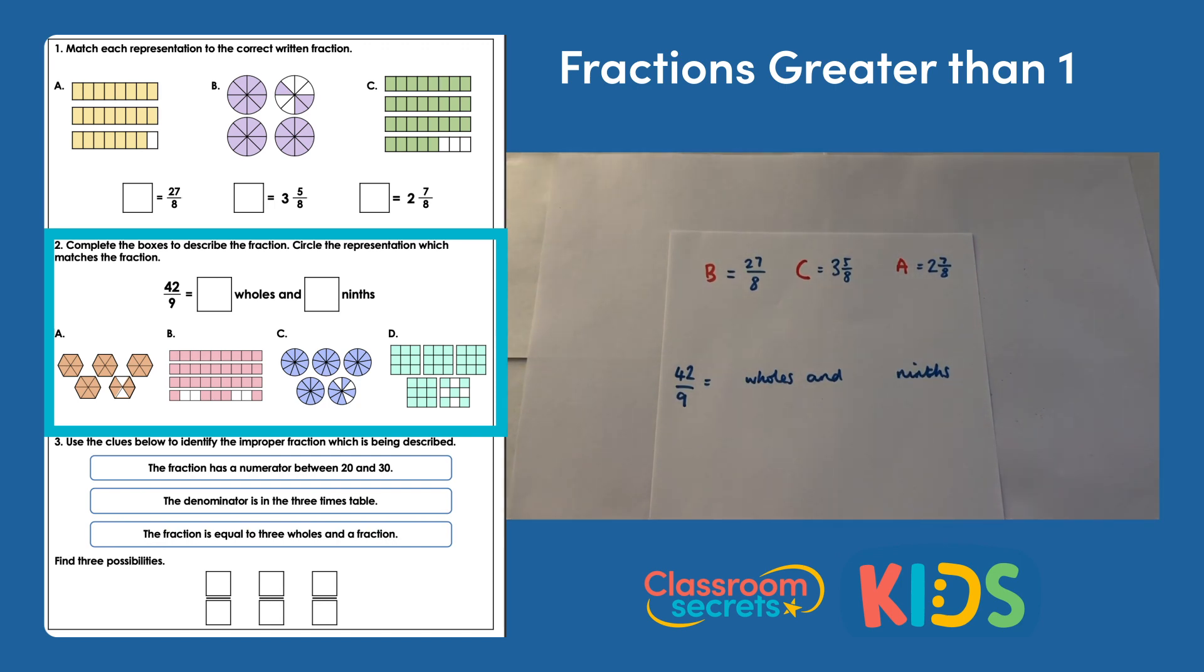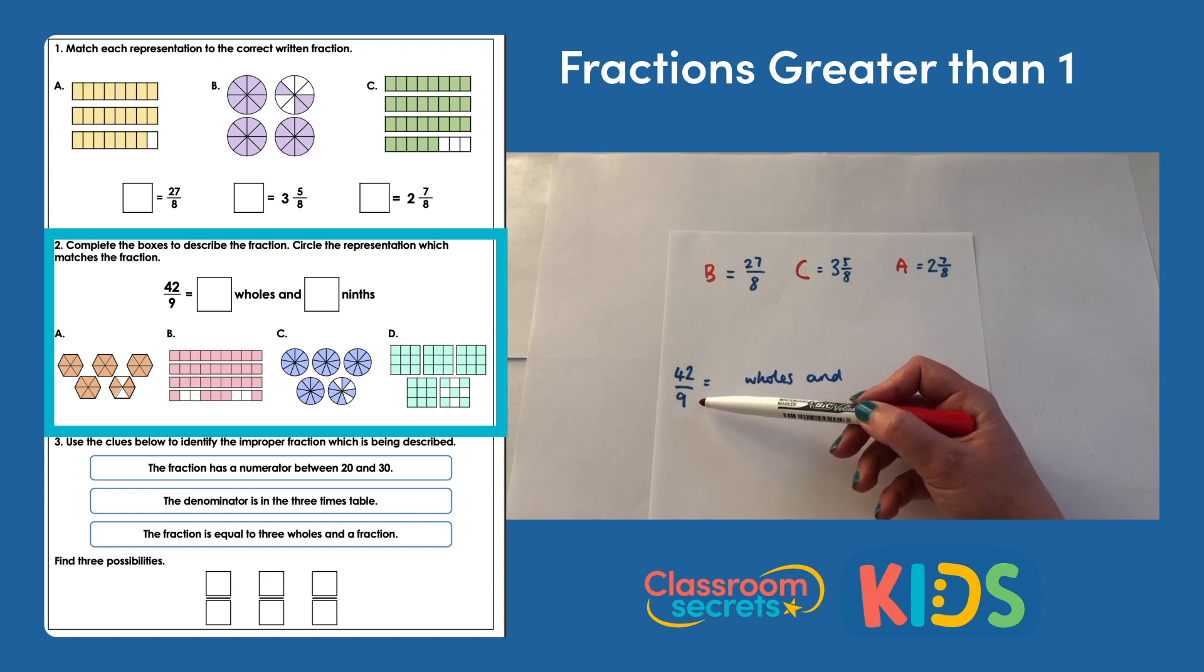I can use my knowledge of my nine times table to work out how many wholes are in this fraction. So if I count in nines: 9, 18, 27, 36. I can't go to 45 because my numerator stops at 42, but I did count four nines.